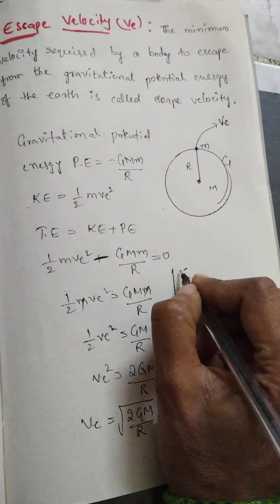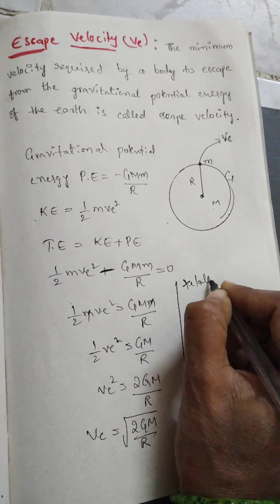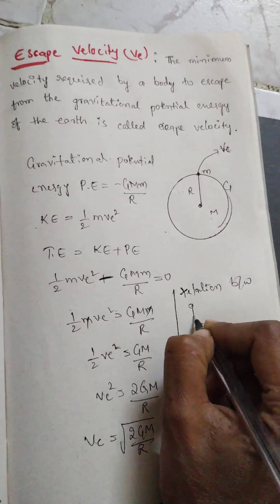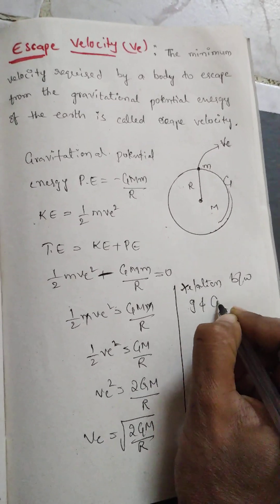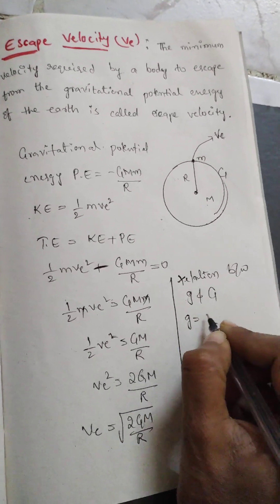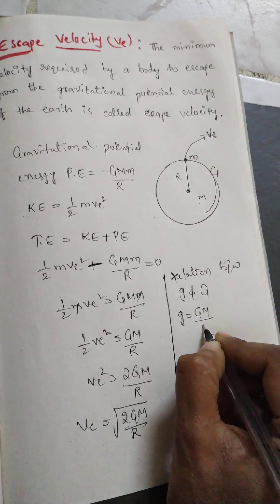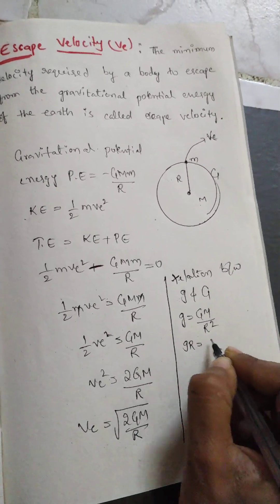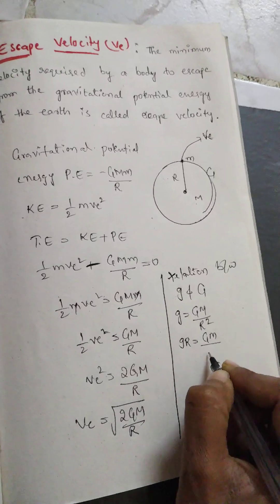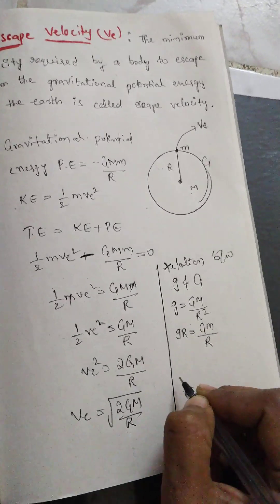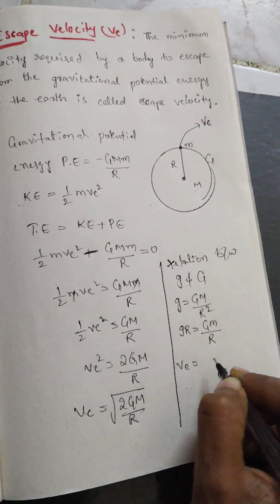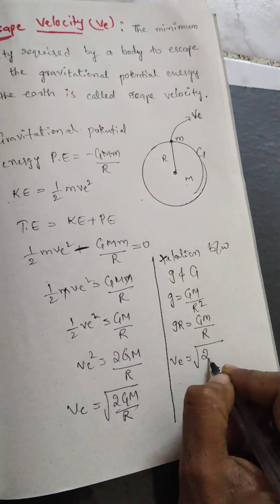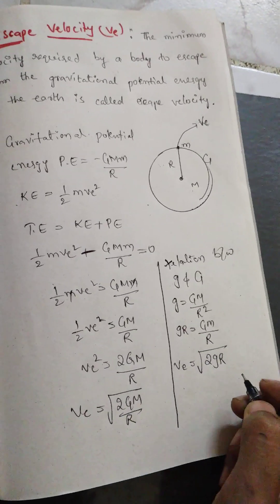We can write this in one more form using the relation between small g and capital G. That relation is g = GM/R², which gives gR = GM/R. Substituting this into our equation, we get the second form: vₑ = √(2gR). Both equations are correct expressions for escape velocity.